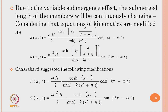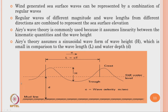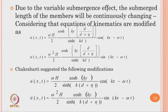Due to the variable submergence effect — when the cylinder is static and the wave passes through it, some portion of the cylinder immerses more and some less — the submerged length of the member continuously changes. Therefore, the kinematics need to be modified if we want to include the wave submergence effect, which is given by Chakravarti's modification. This modification accounts for the difference in horizontal water particle velocity and acceleration. In this expression, d is the water depth measured from the mean sea level.